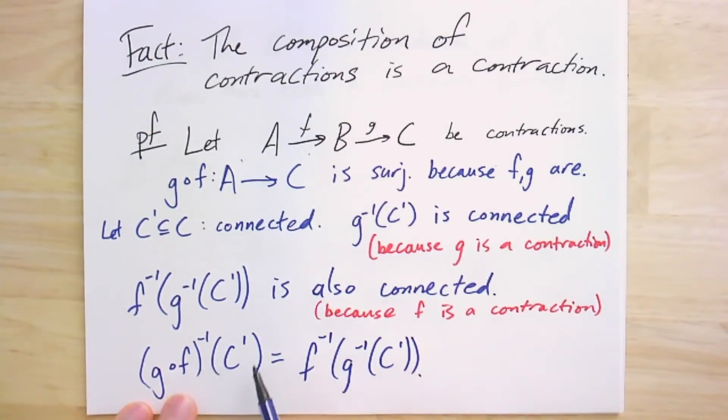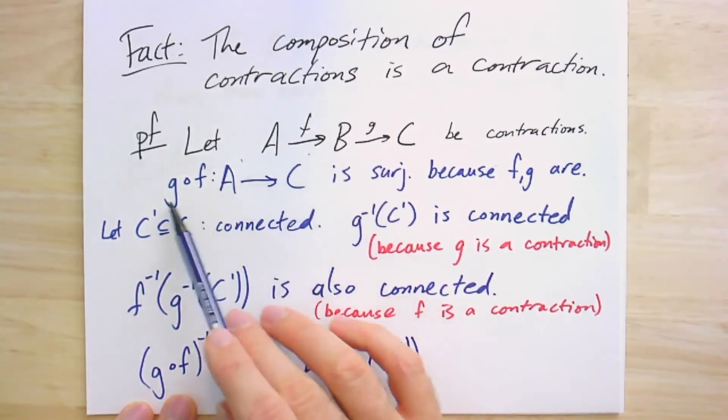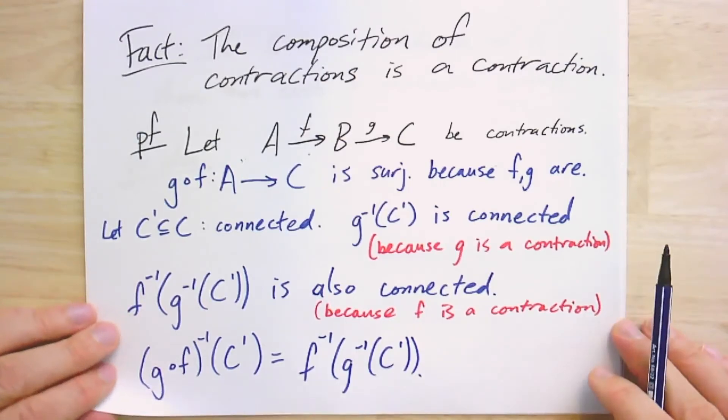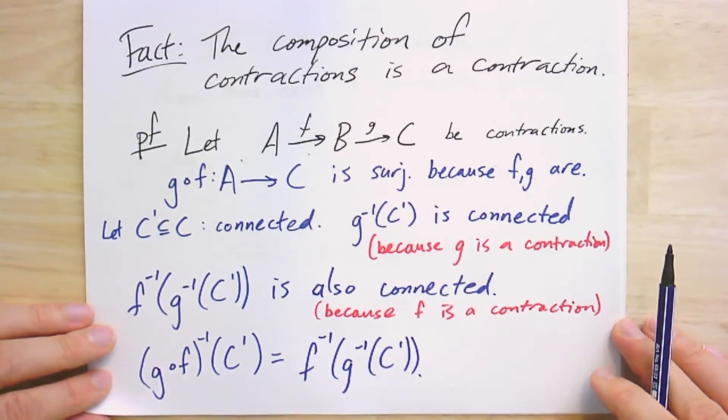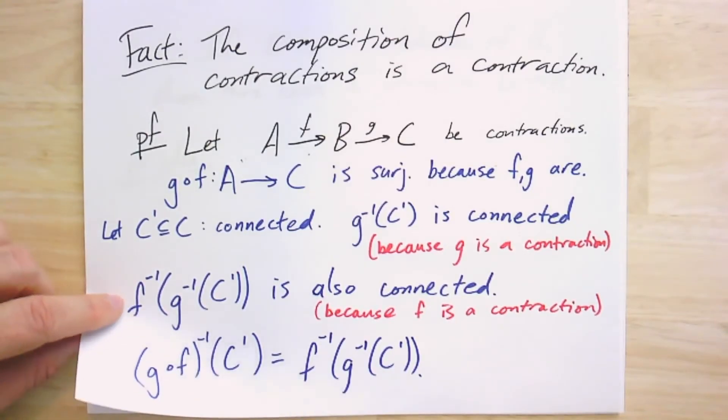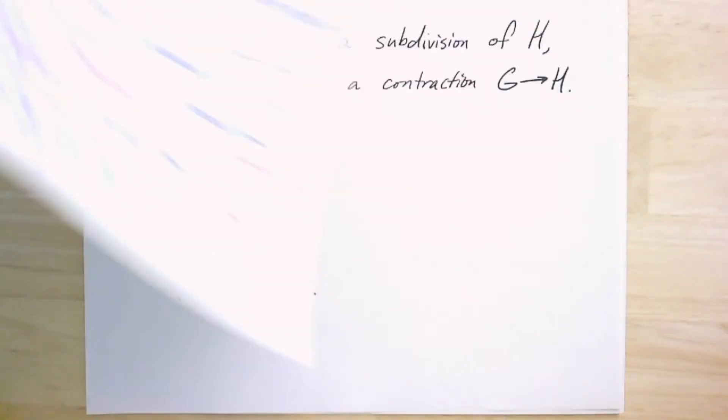So we've shown that for any, we picked an arbitrary connected subgraph of C, and its preimage is connected, and it's also surjective, and therefore this composition satisfies the definition of a contraction. So this is a way to show that contractions of contractions are contractions. We can compose them to make more.